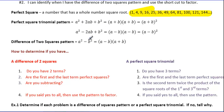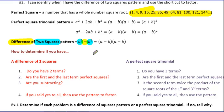Difference of Two Squares is exactly what the name says. You have a difference — difference means subtract — two squares, meaning there are two numbers that are Perfect Squares right there and right there. If you happen to have a Difference of Two Squares, we can factor it as (A minus B)(A plus B). We'll go into a little bit more detail on that in a second.